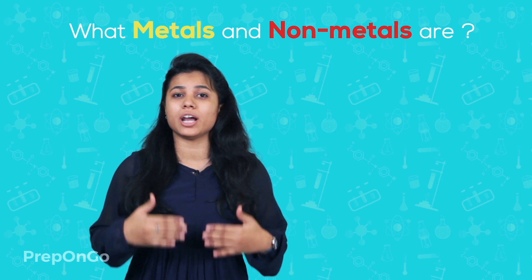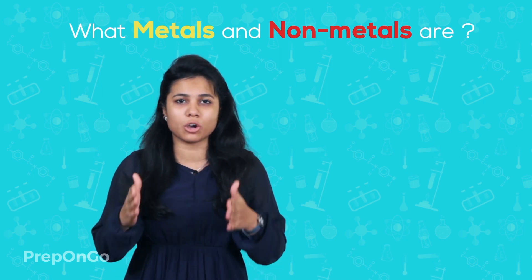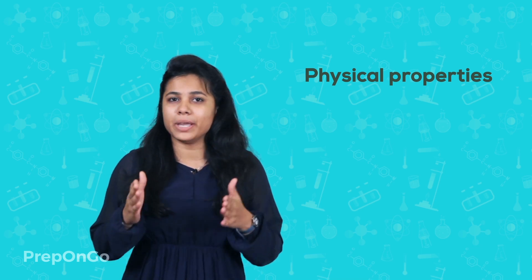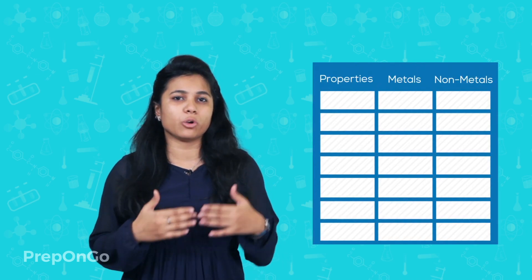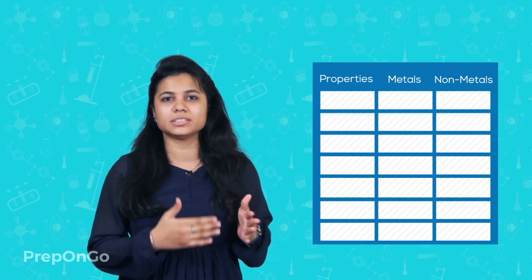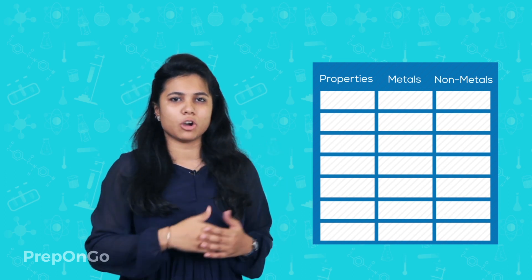Hello everyone. In the previous video we had seen how metals and nonmetals are important to us. This makes it important for us to know what metals and nonmetals are exactly. We can do this by studying the various different physical properties which are shown by metals and nonmetals. Physical properties are those which can be observed without any change in chemical composition. We can do this by drawing a simple comparative chart with different properties between metals and nonmetals.